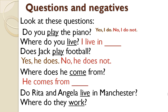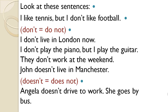Because Jack is a man, we use the pronoun 'he.' But if the noun is female, the pronoun will follow — so it will be 'she.' For example: Does Angela play the piano or play football? You would say: Yes, she does. No, she doesn't. Because Angela is a female noun. Now look at these negative sentences: I like tennis but I don't like football. Don't equals do not. I don't live in London. I don't play the piano, but I play the guitar. They don't work at the weekend — something that happens every weekend. John doesn't live in Manchester. Doesn't equals does not. Angela doesn't drive to work — she goes by bus. That's something regular that happens every day.